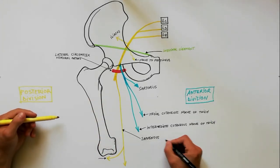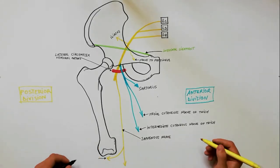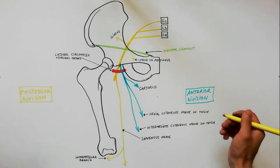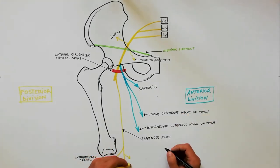The saphenous nerve is the largest cutaneous branch of the femoral nerve. At the medial side of the knee, it gives off a large infrapatellar branch, which is distributed to the skin in front of the patella.